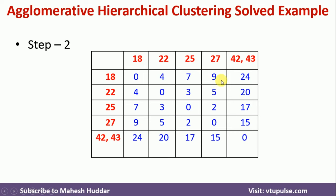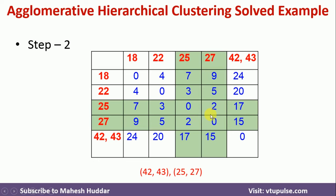From this matrix in the second step, we find the minimum distance again. Looking at the matrix closely, the distance between 27 and 25 is the minimum. So we merge 27 into 25, creating another cluster, and then the 27 row and column are removed. This is how it looks in the pictorial representation.